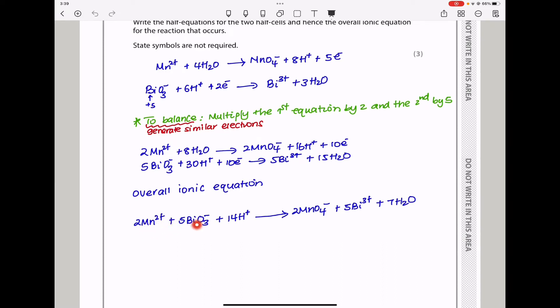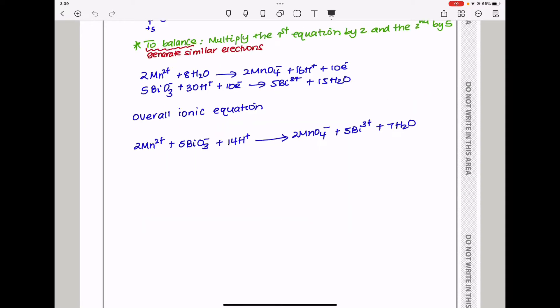The overall equation is 2Mn²⁺ + 5Bi³⁺ + 14H⁺ gives us 2MnO₄⁻ + 5Bi³⁺ + 7H₂O. The hydrogen ions were 30 here and 16 there, so they cancel out to give 14 on this side.